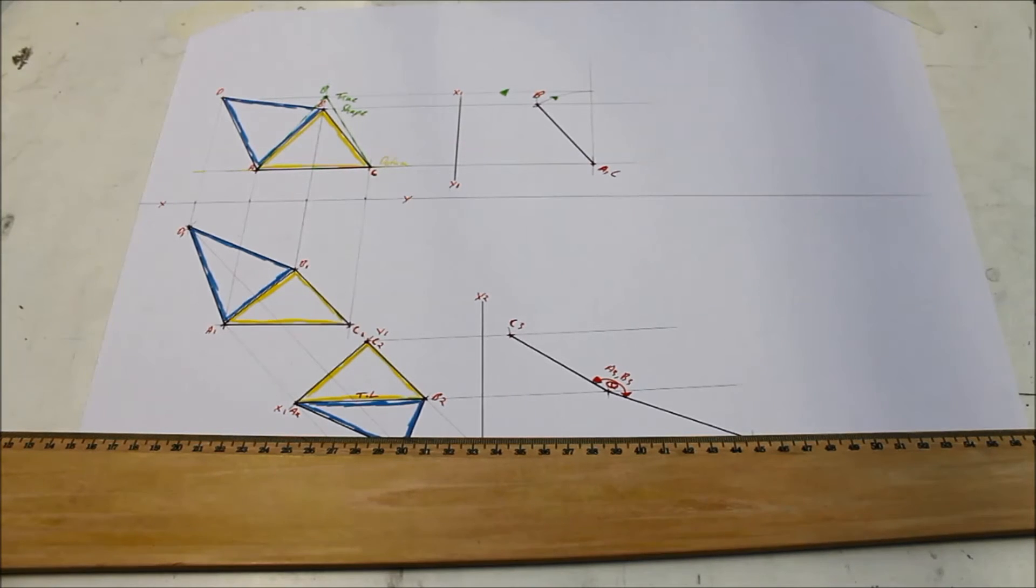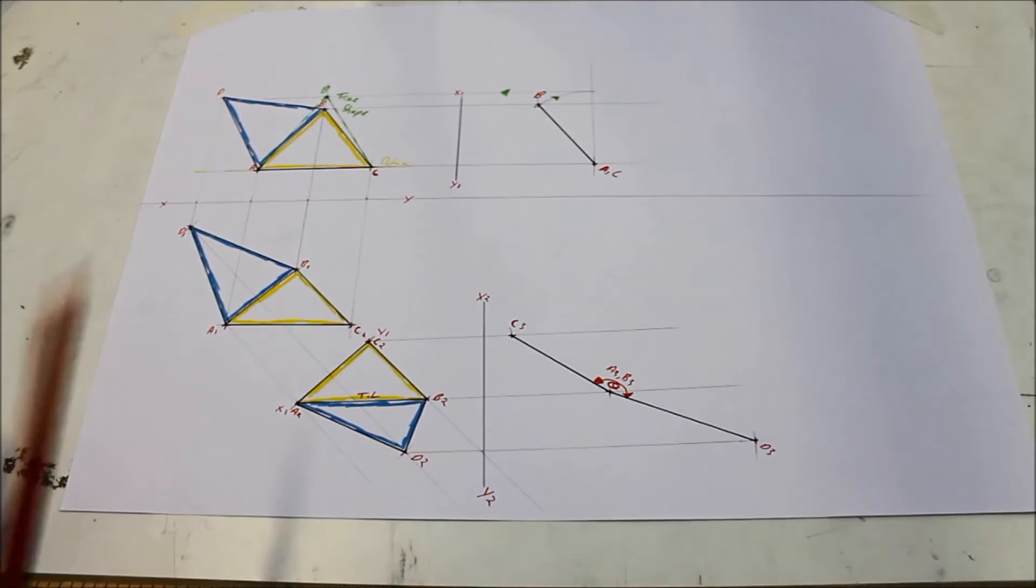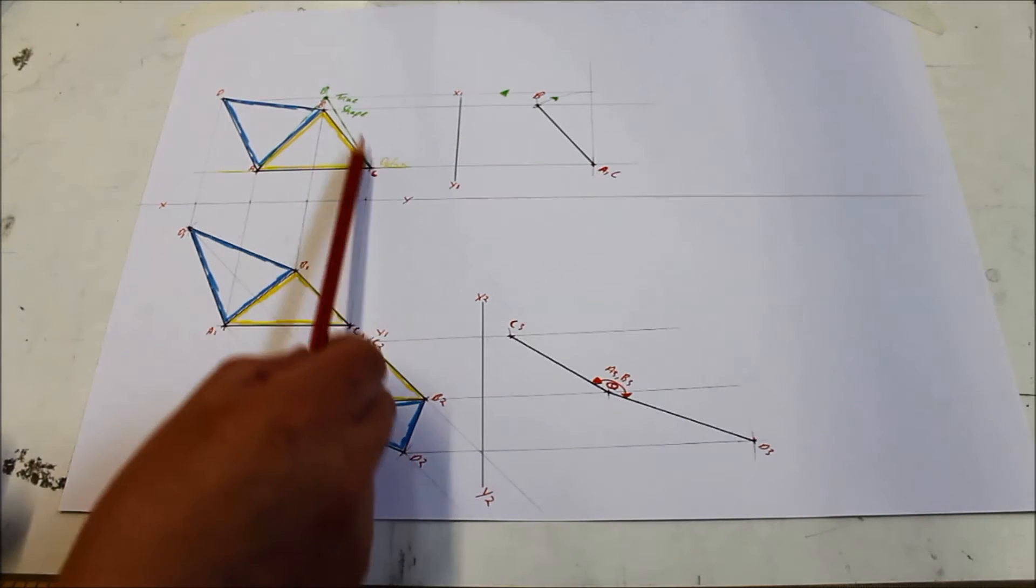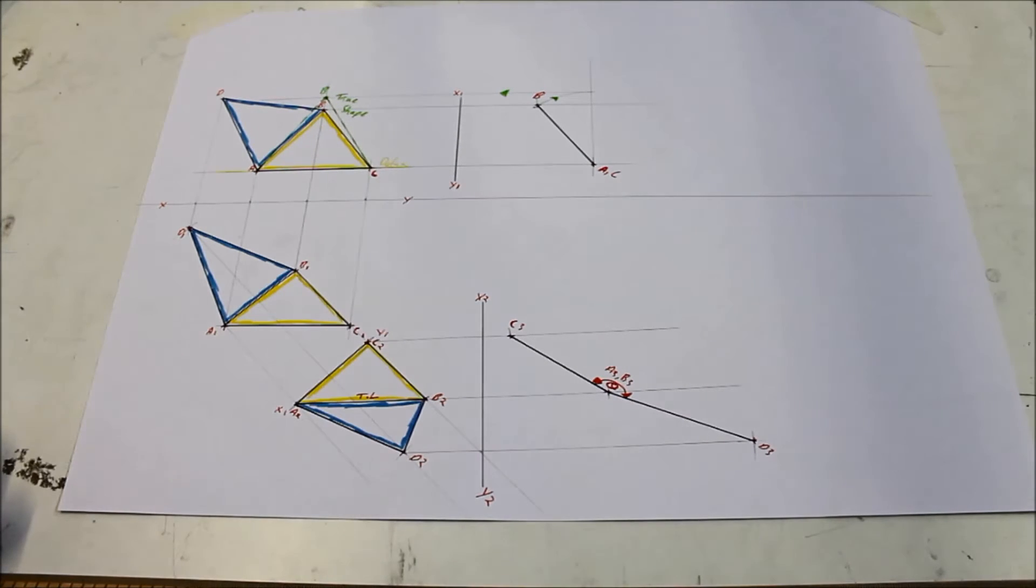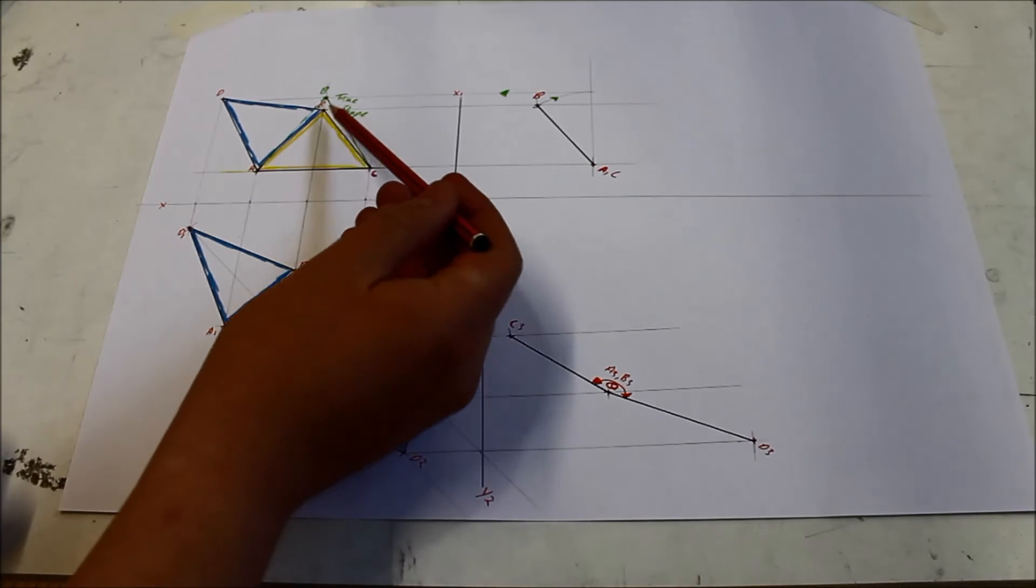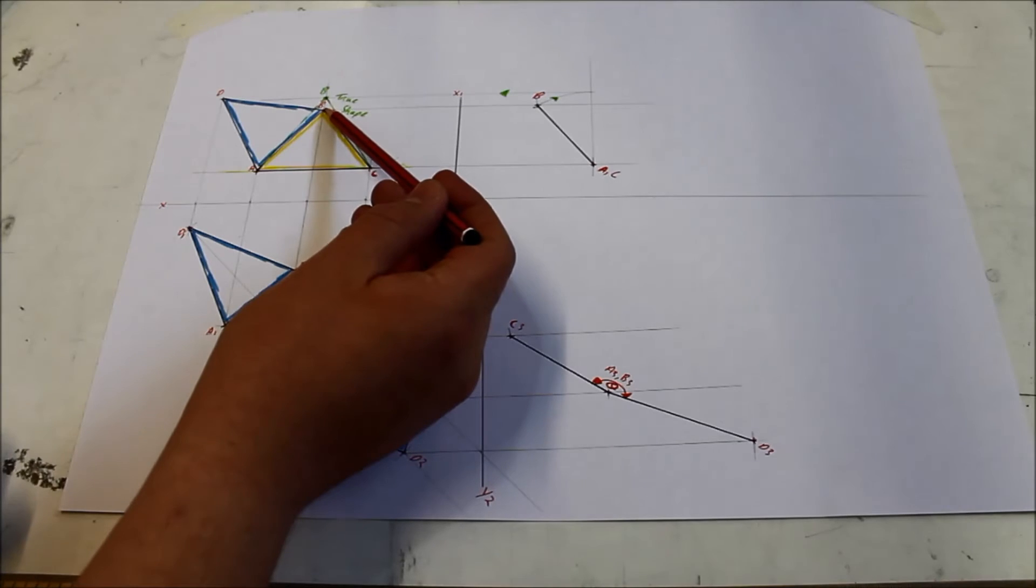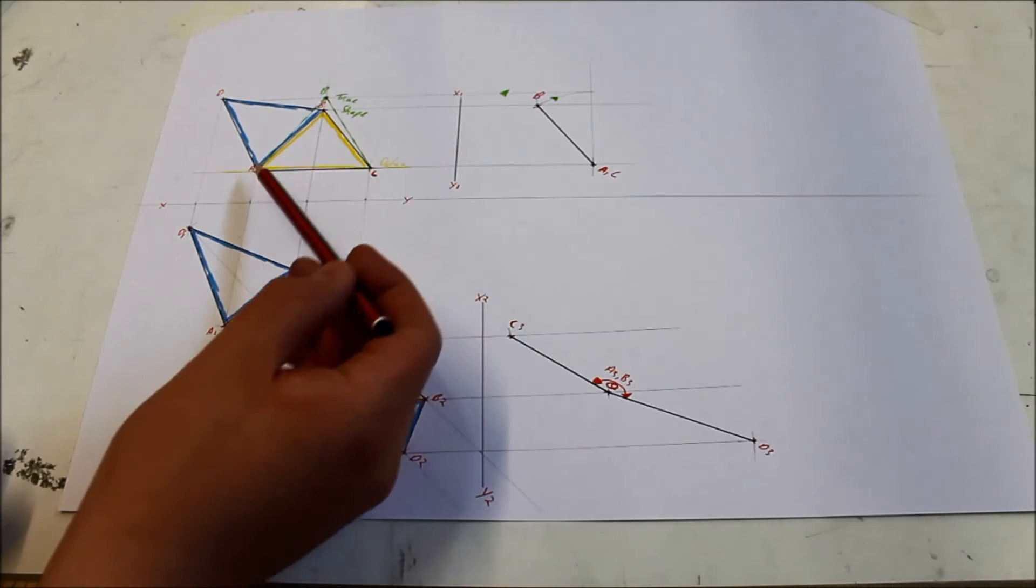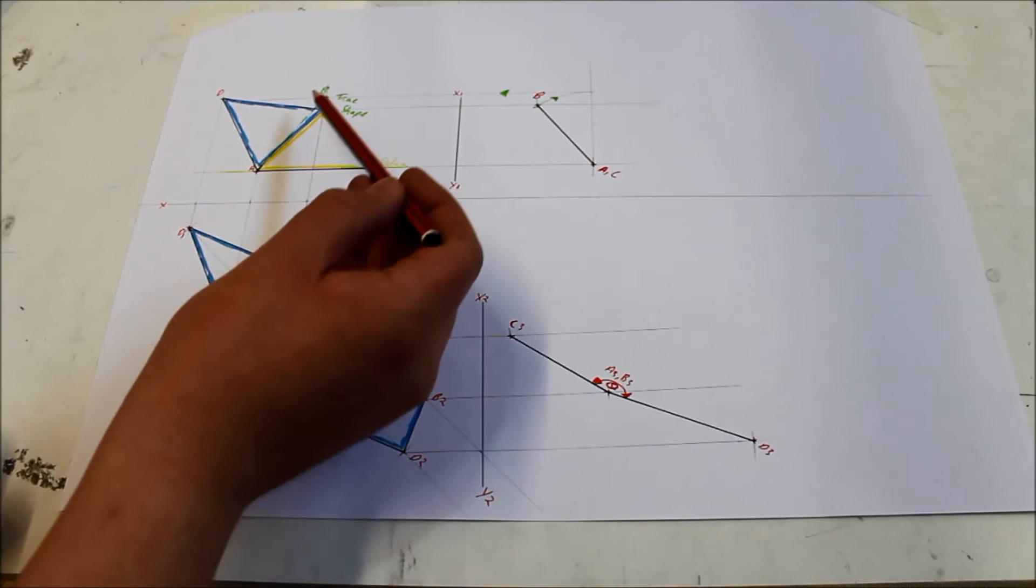So part D is: determine the traces of the plane which contains the triangle ABC. So we have to find the traces of the plane here ABC, so find basically where it cuts the horizontal plane and where it cuts the vertical plane. What I'm going to do is project my edge here AB, because we need to find where it cuts the horizontal trace.